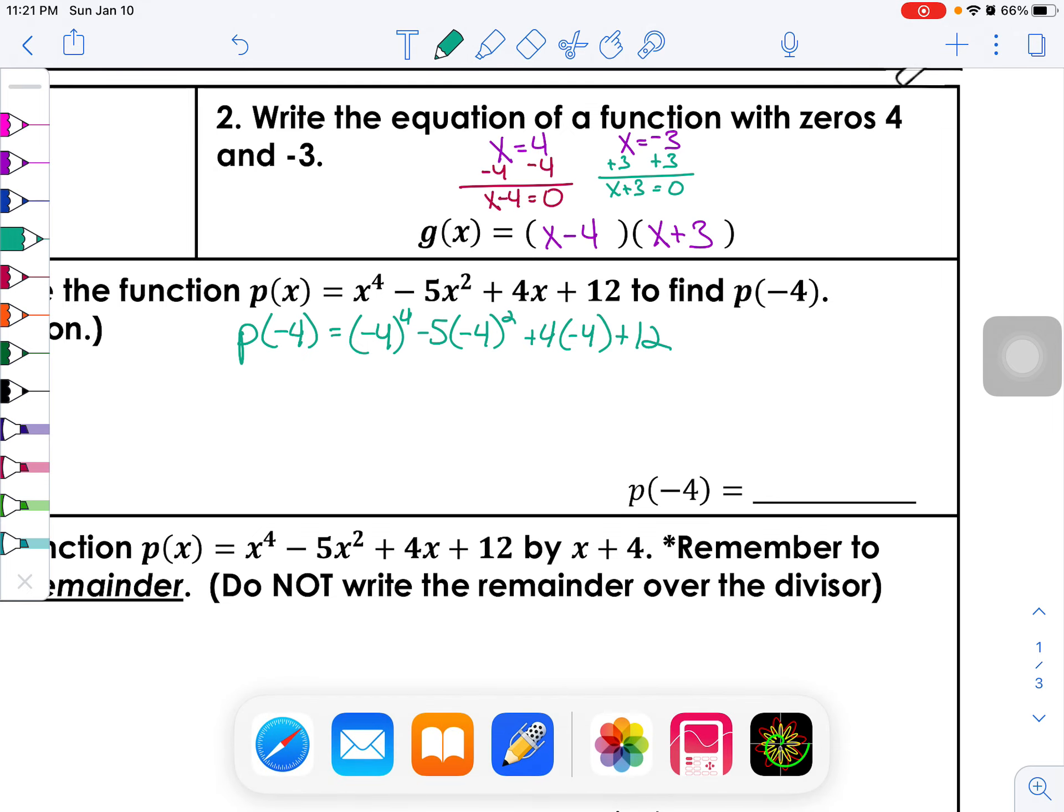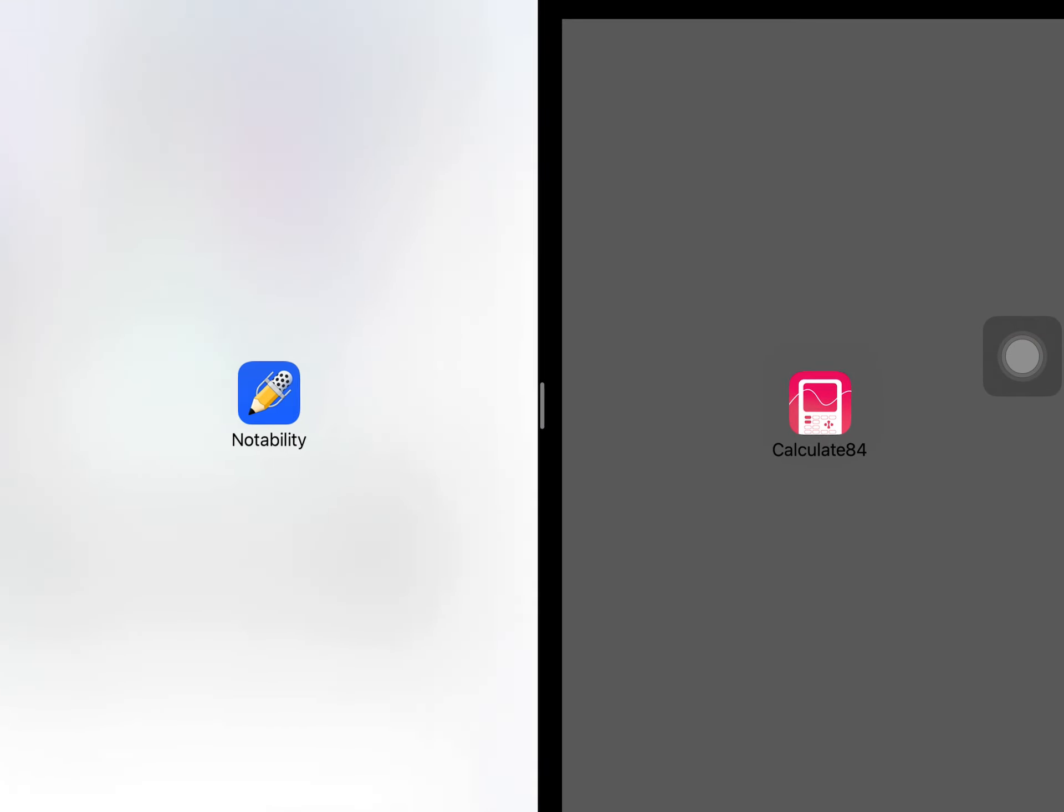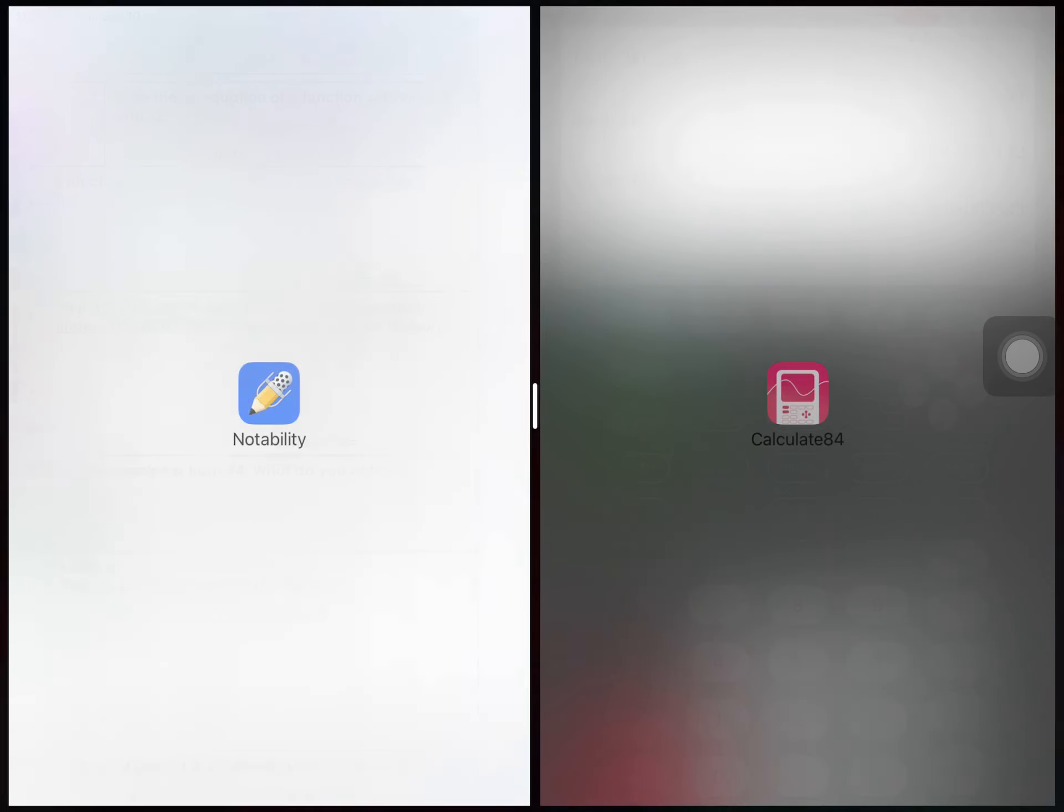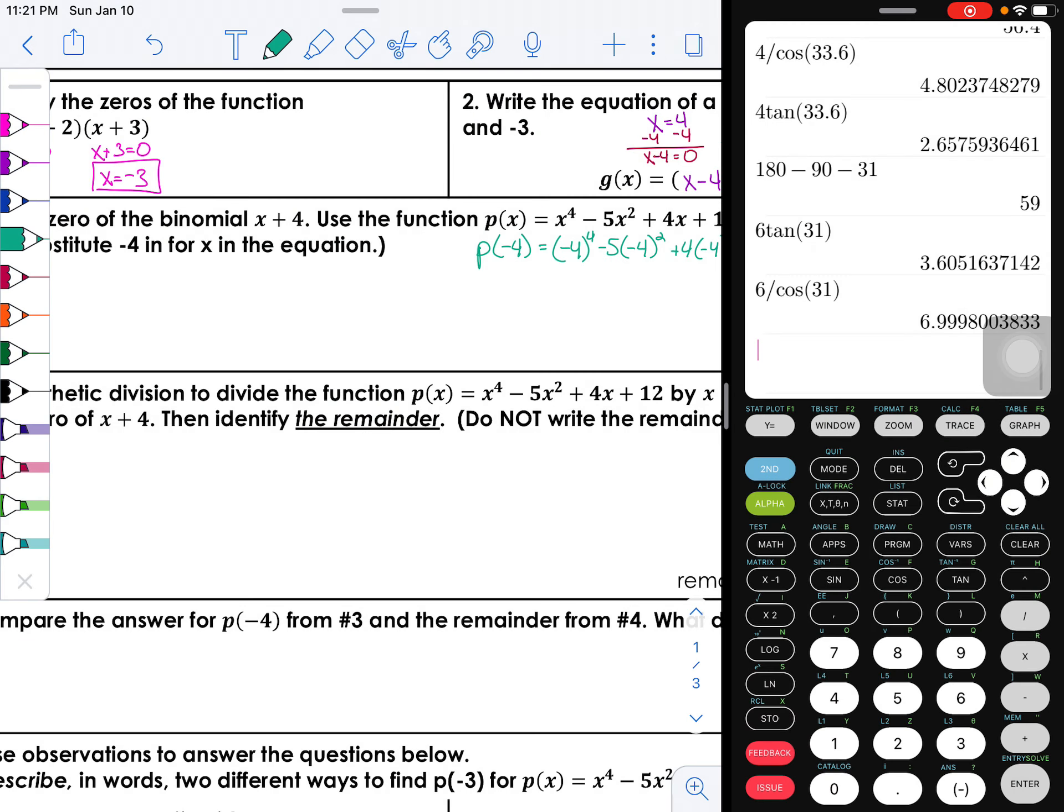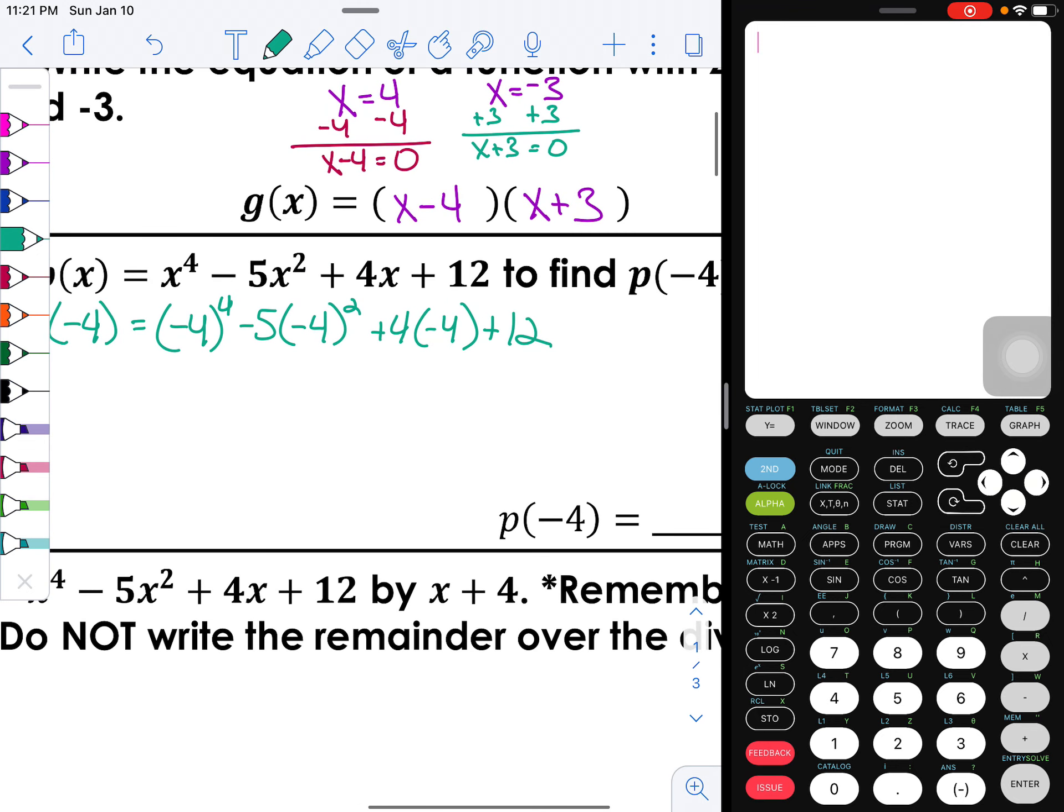So p of negative four is equal to, and I'm going to use parentheses everywhere I need to, okay, plus four times negative four and then plus 12. Let me see if I can pull up—I'm going to go ahead and pop up Calculator 84 here and use it. Let me clear out all the mess I had in there.